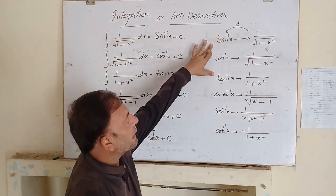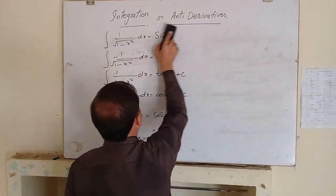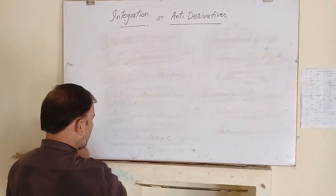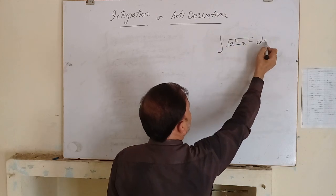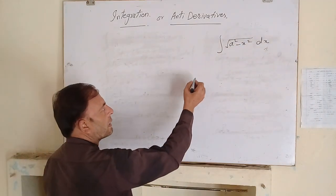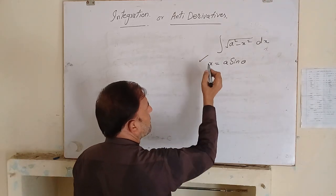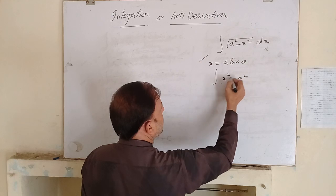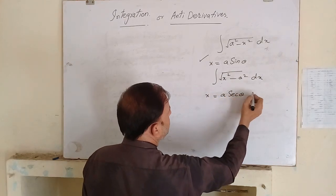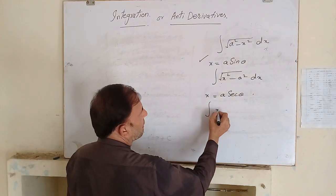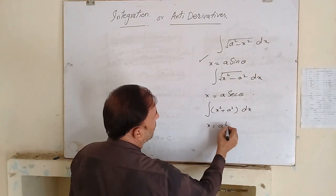We have now discussed all the integrations of inverse trigonometric functions. We also have some general substitution formulas. If we have an expression like (a squared minus x squared) to integrate, we substitute x equal to a sin theta. If we have to integrate (x squared minus a squared), we suppose x equal to a secant theta. And if we have to integrate (x squared plus a squared), we suppose x equal to a tan theta.